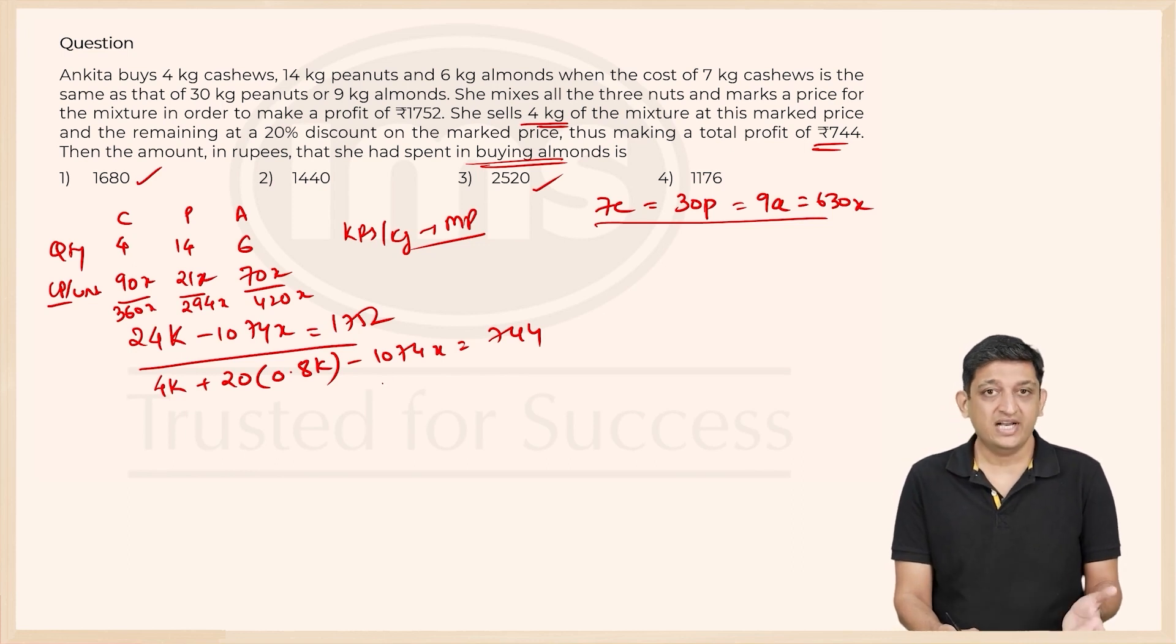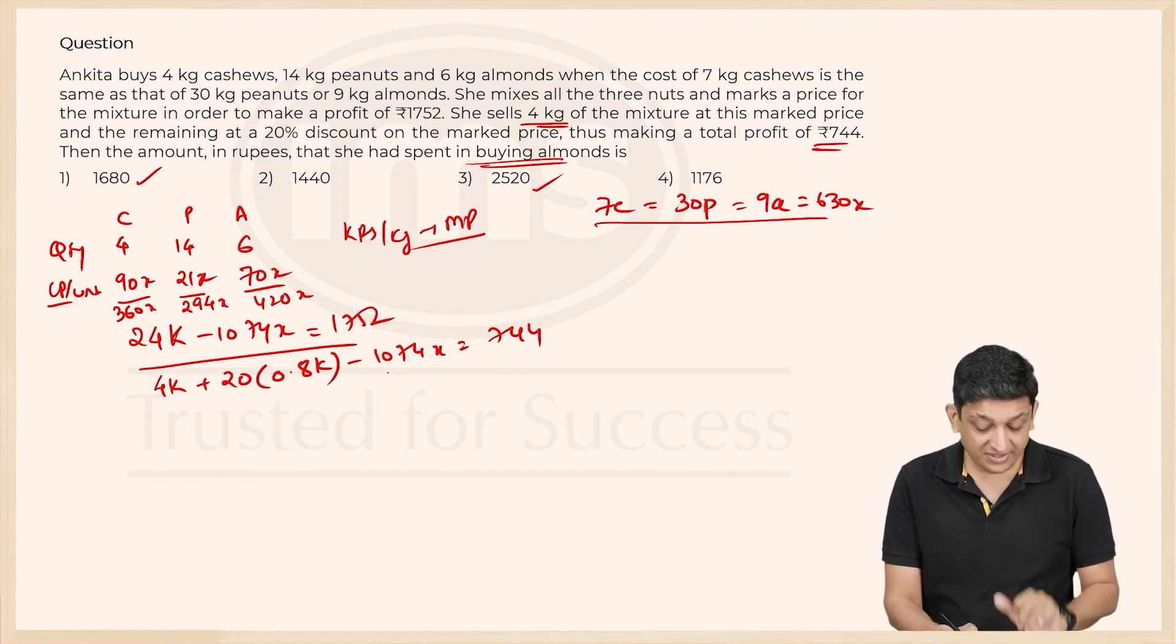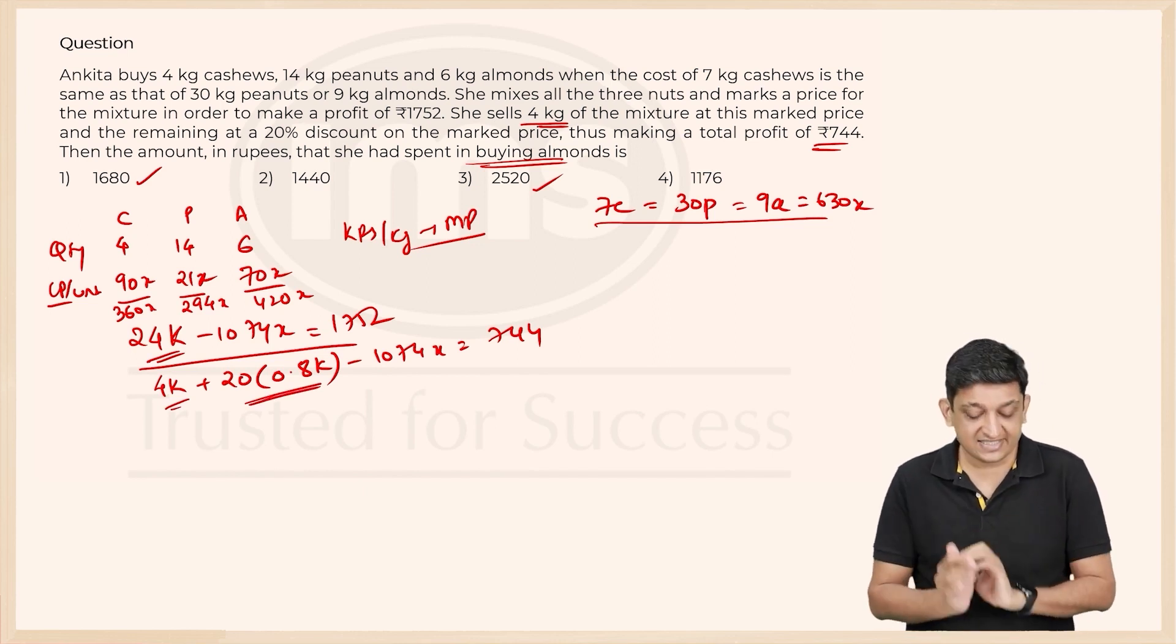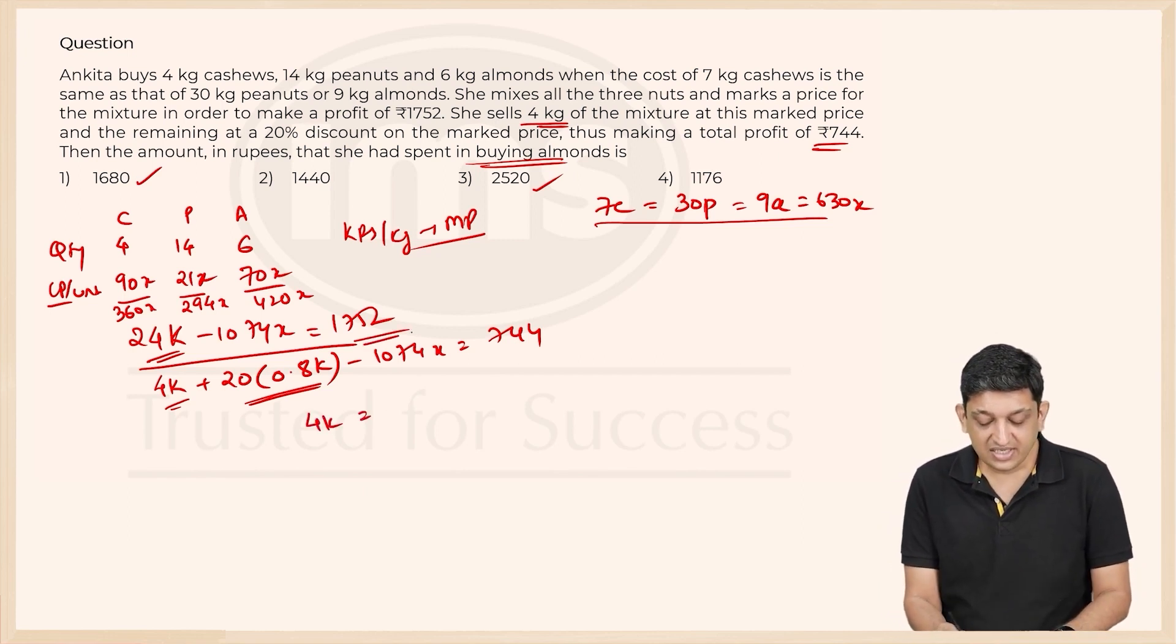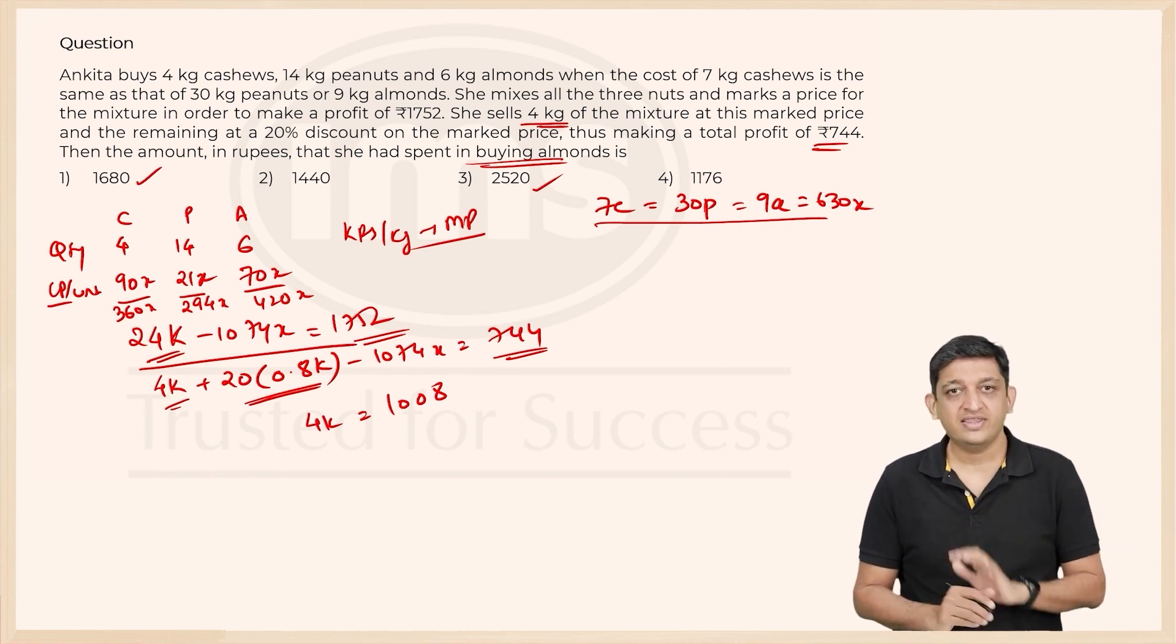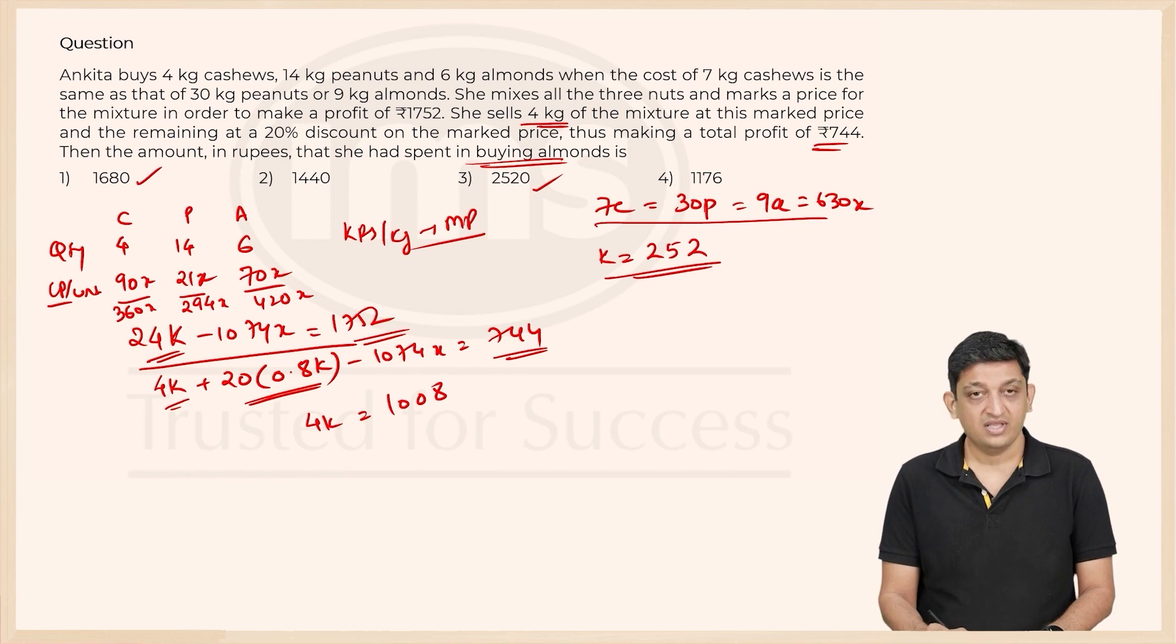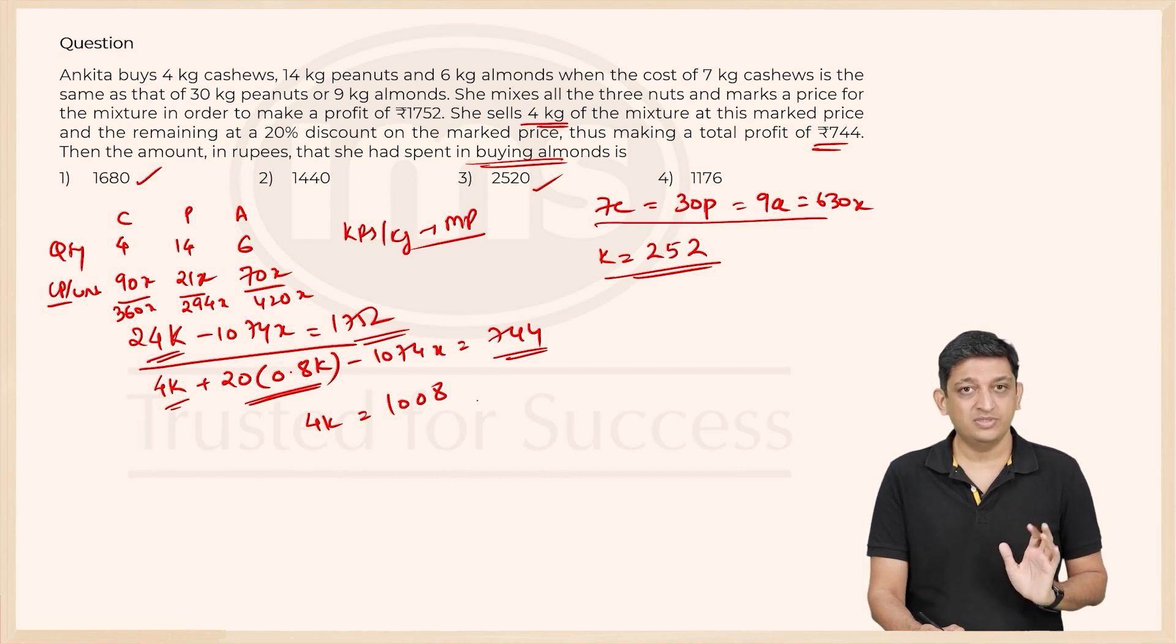Now by using these two equations, we can eliminate X entirely, we can simply figure out K. So if I subtract the second equation from the first equation, 24 minus 4 plus 20 into 0.8 that is 16, so 24 minus 20 will be nothing but 4K equals 1752 minus 744 which will be 1008. That tells us that K is nothing but 252 rupees per kg.